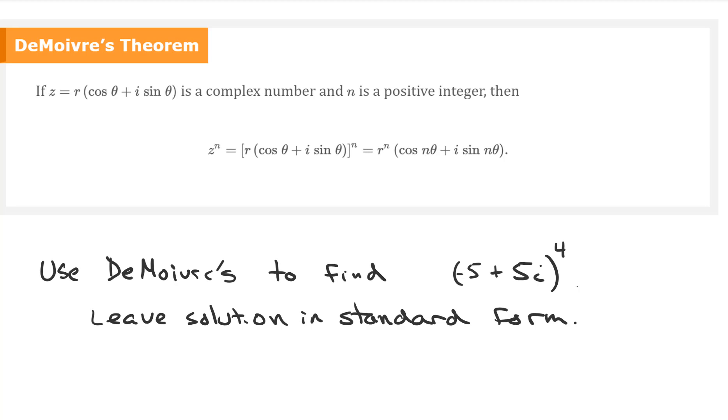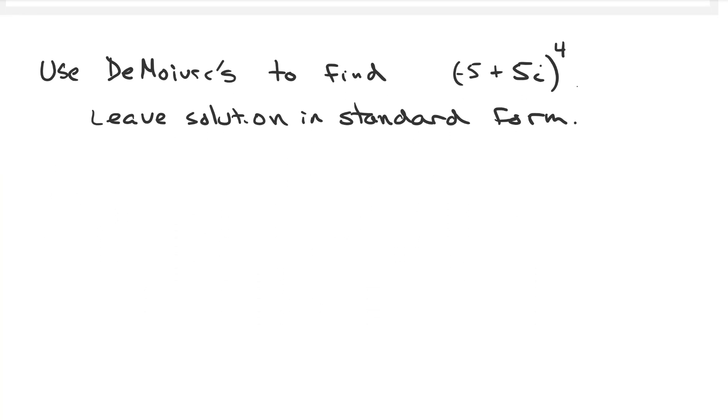Our question has it in standard form and says use DeMoivre's to find what that's going to equal. We're going to leave our solution in standard form. You could look at something like this and go, oh what do you mean, negative 5 plus 5i, and then test it. But you know what you wouldn't be doing? You wouldn't be using DeMoivre's. So while you could do that one on your homework, you wouldn't be able to do that on a test because it asks you to use DeMoivre's there.